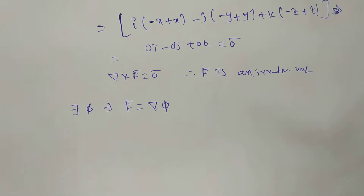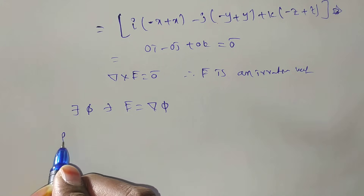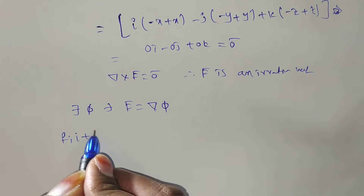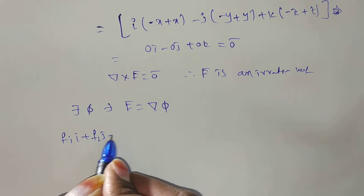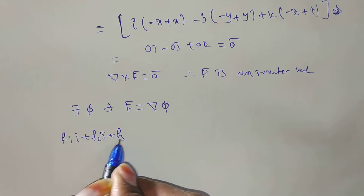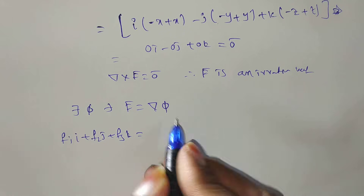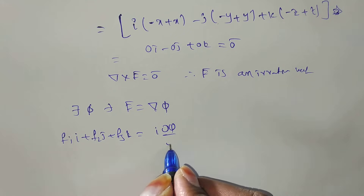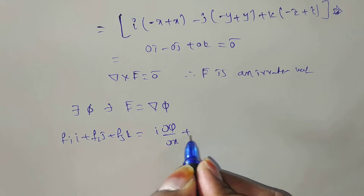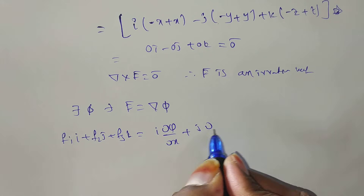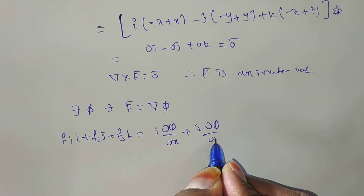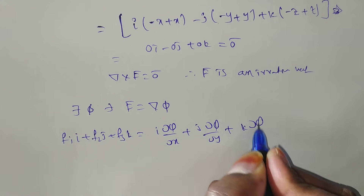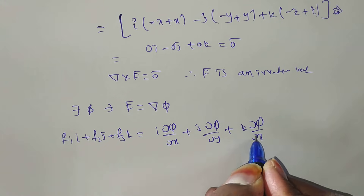So f̄ = f1·i + f2·j + f3·k, and ∇π = i·(∂π/∂x) + j·(∂π/∂y) + k·(∂π/∂z).